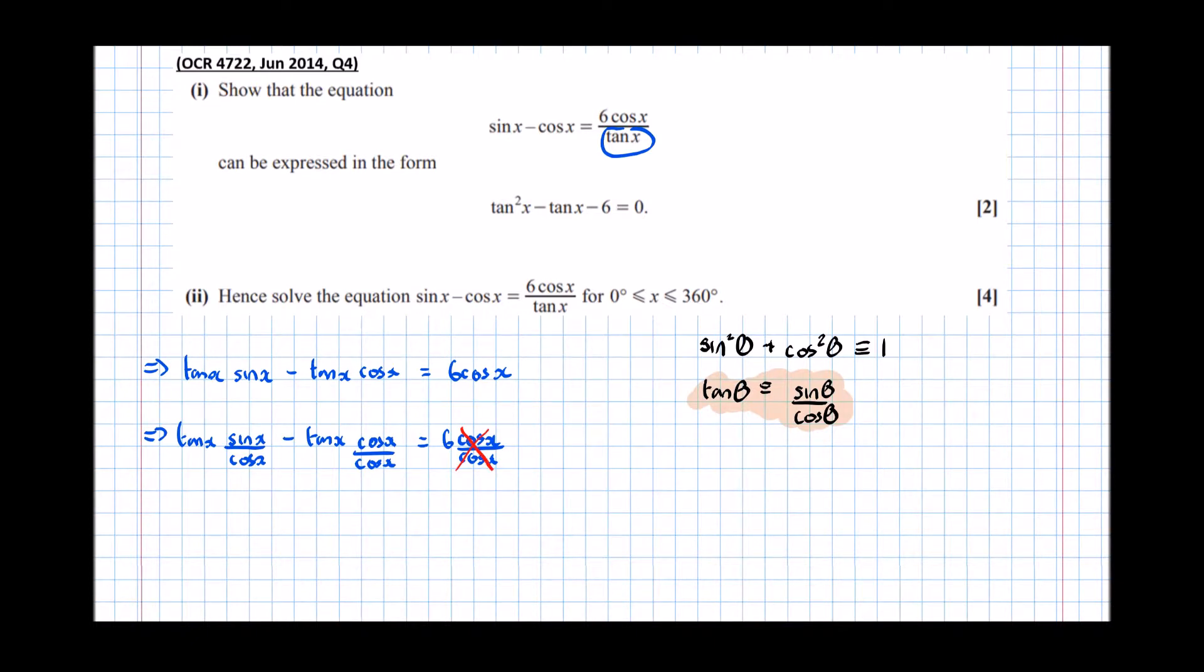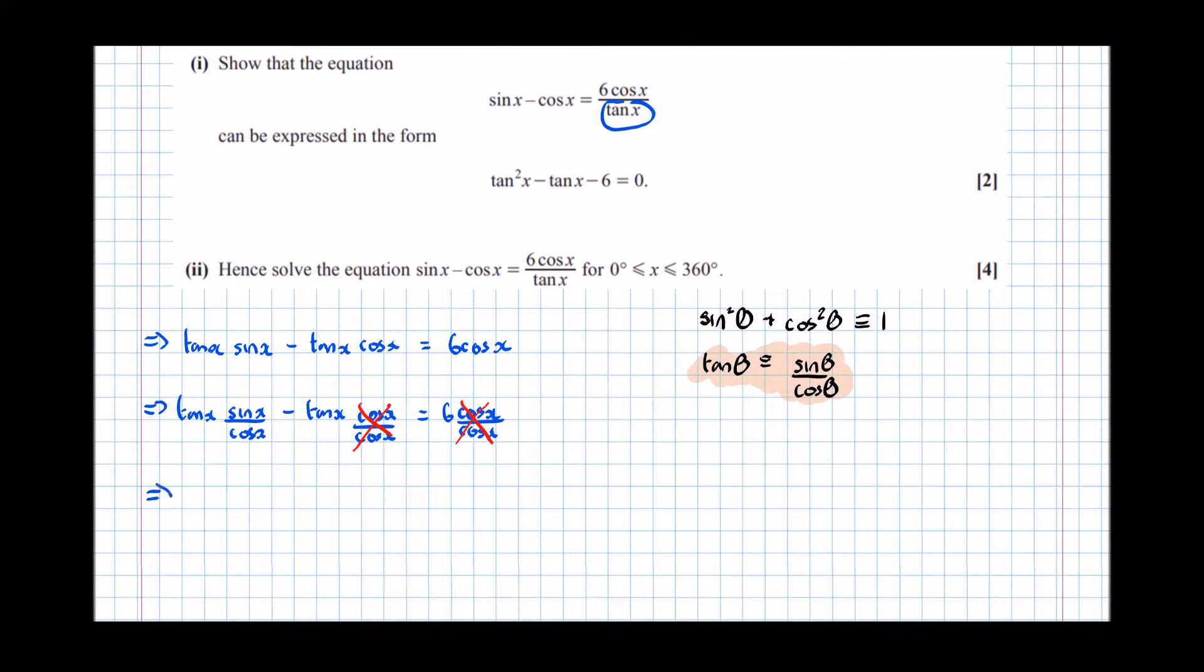Well notice that these two cos x's cancel. Cos x divided by cos x is 1. But here sin x divided by cos x is tan x. So that gives me tan x times tan x, so tan squared x minus tan x, then taking the 6 over this side, minus 6 equals 0. And there's the first part done.